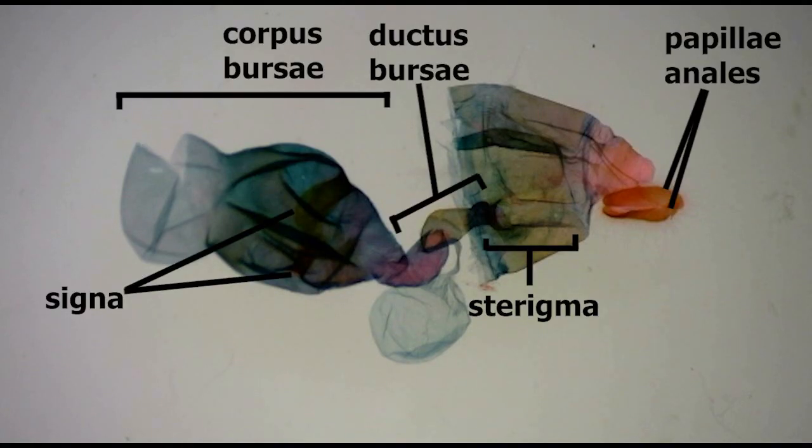Also just like it is in the male, I can place the genitalia under a coverslip in a shallow well microstrip slide for photography or closer examination.